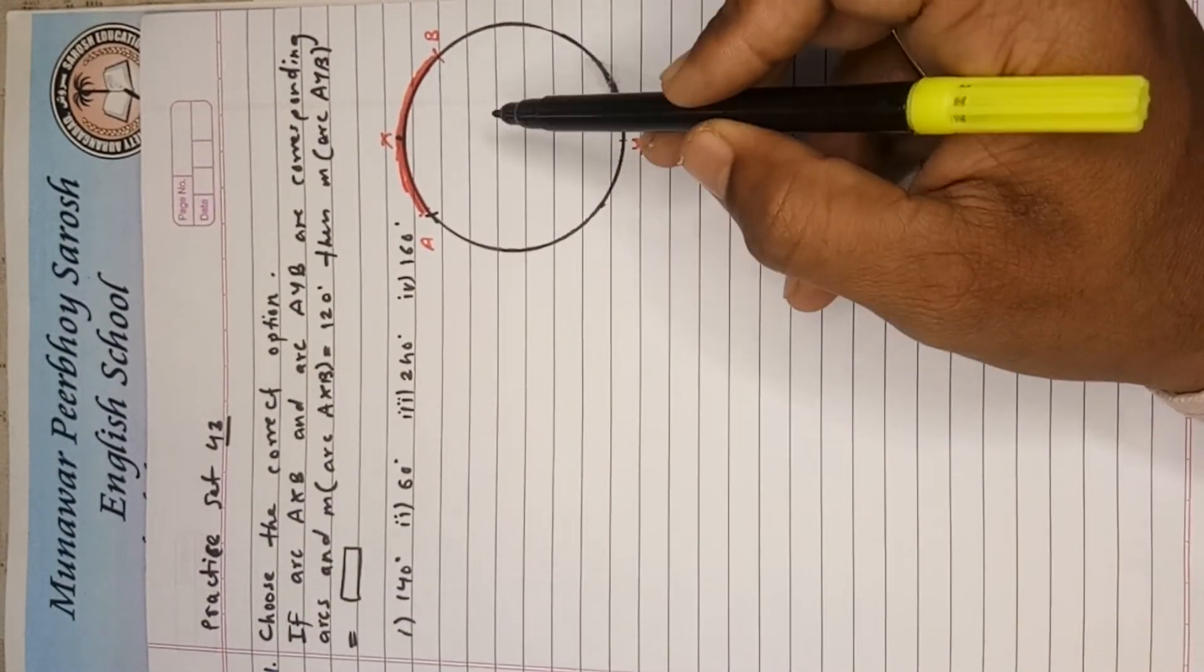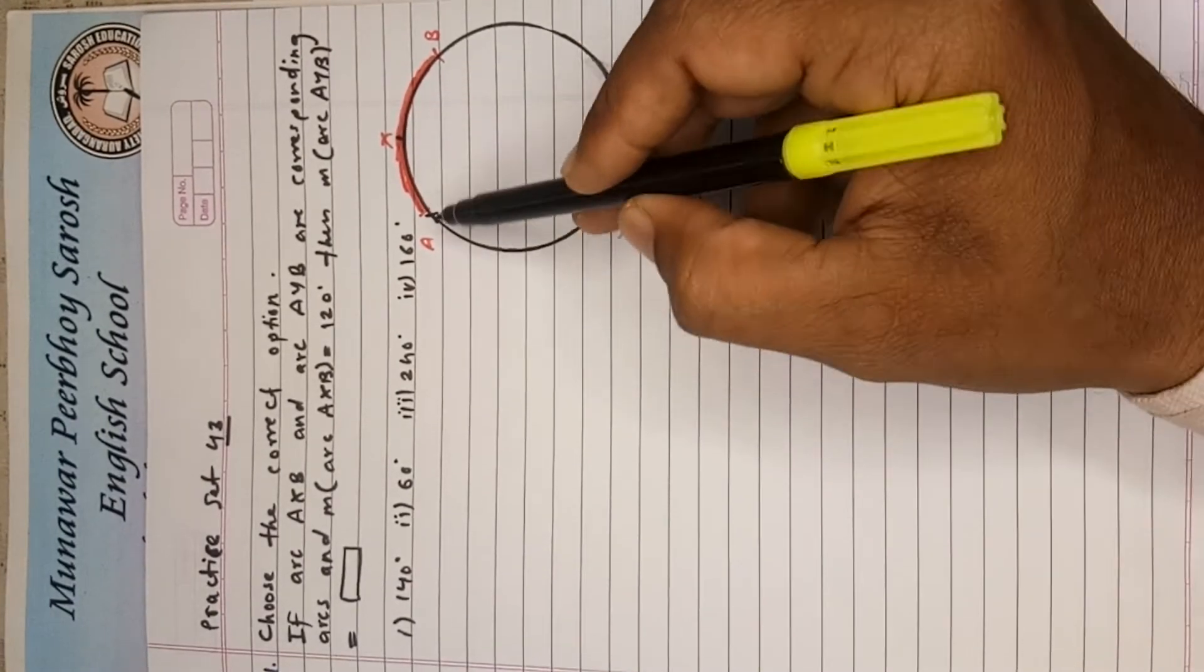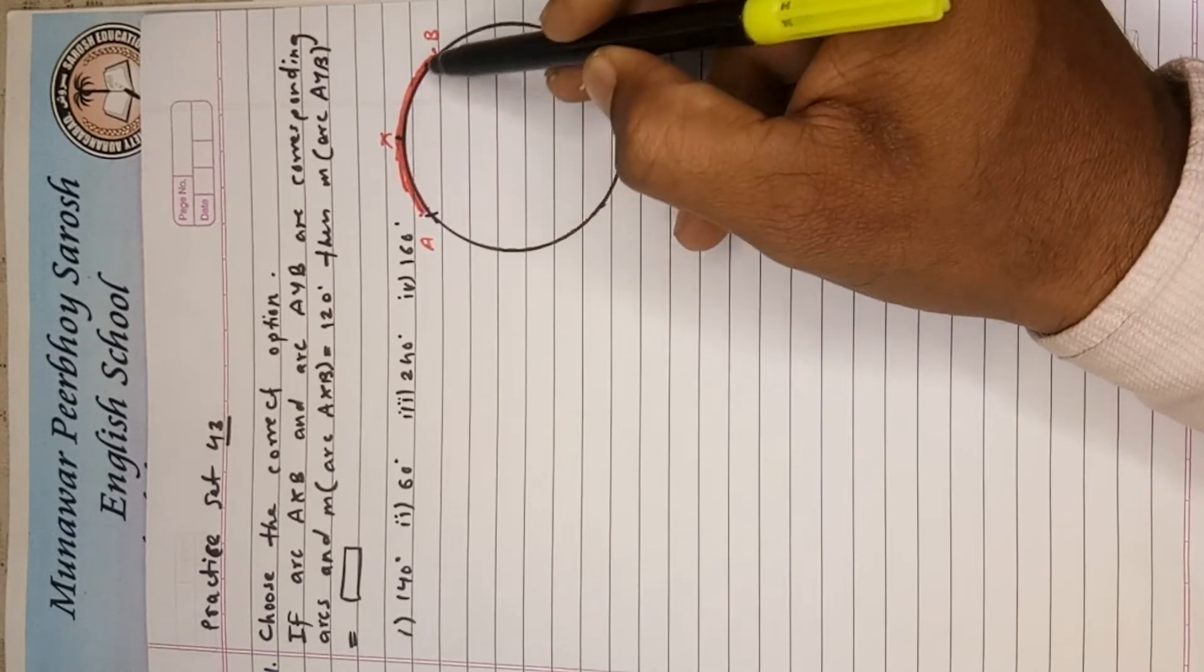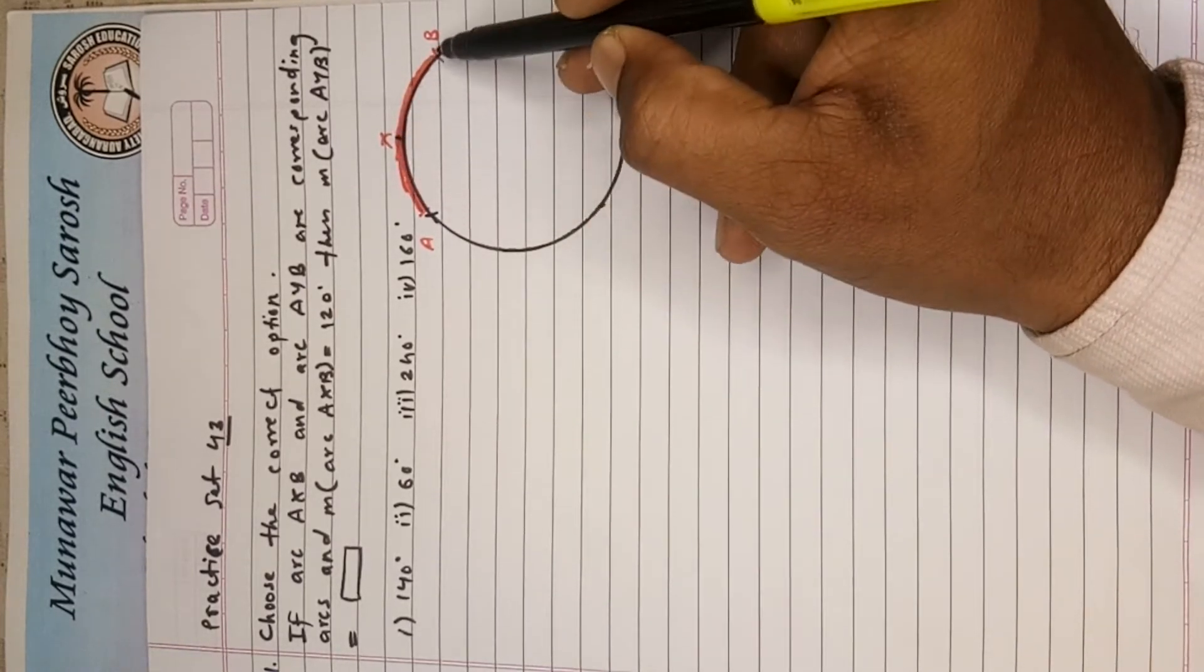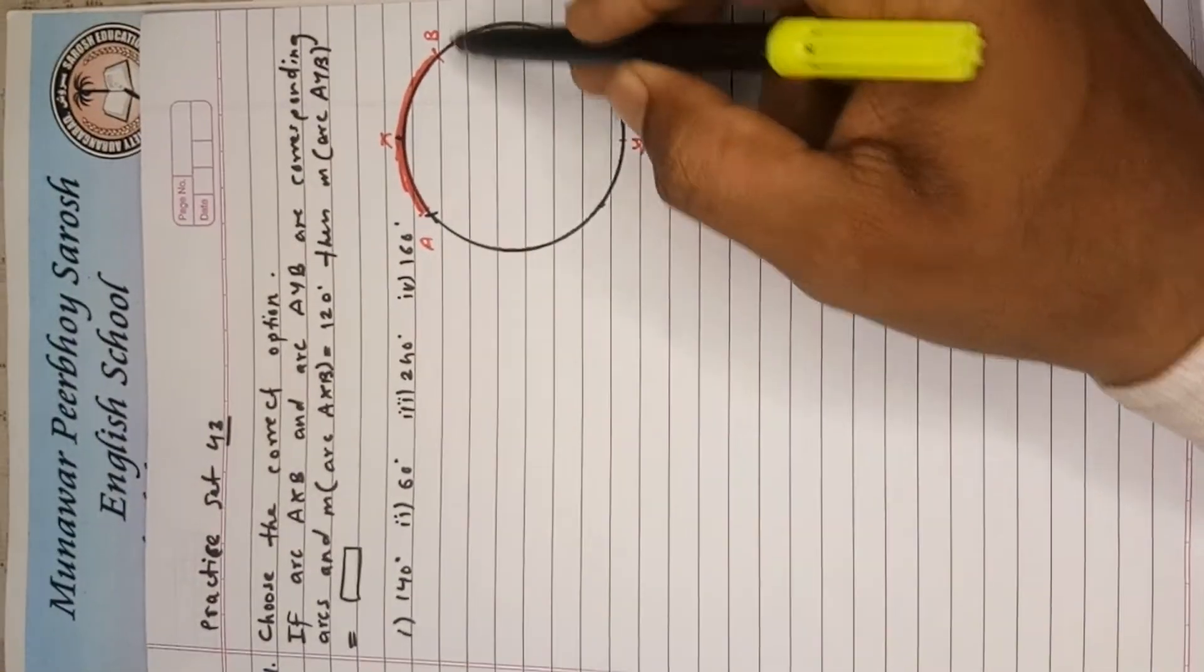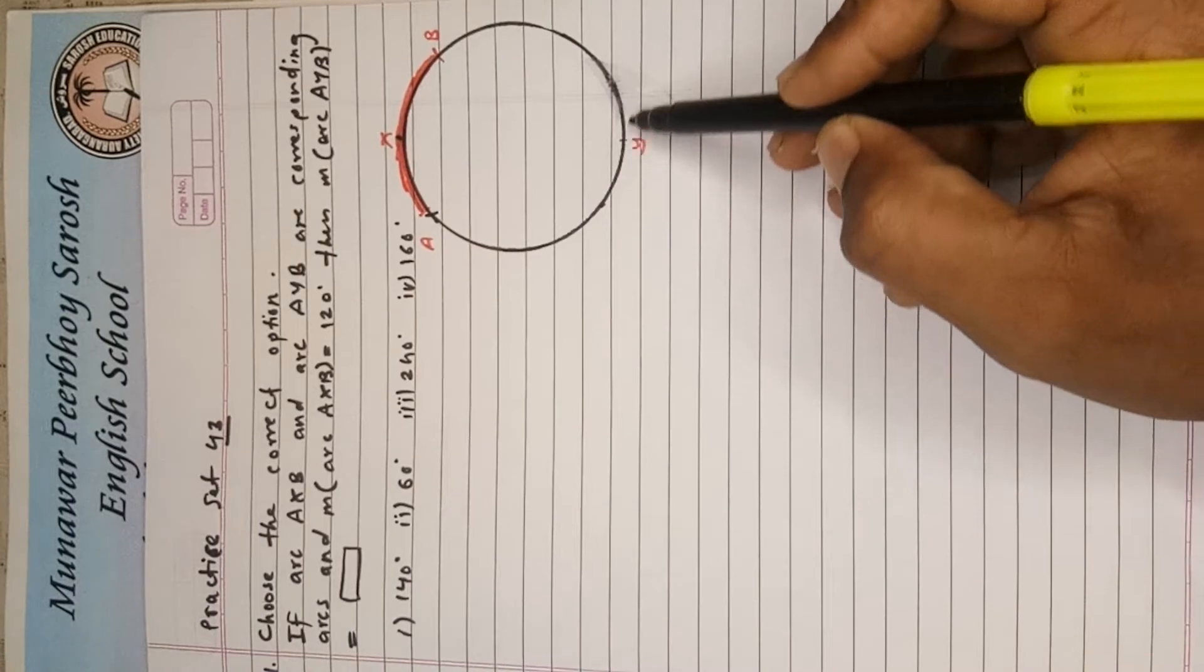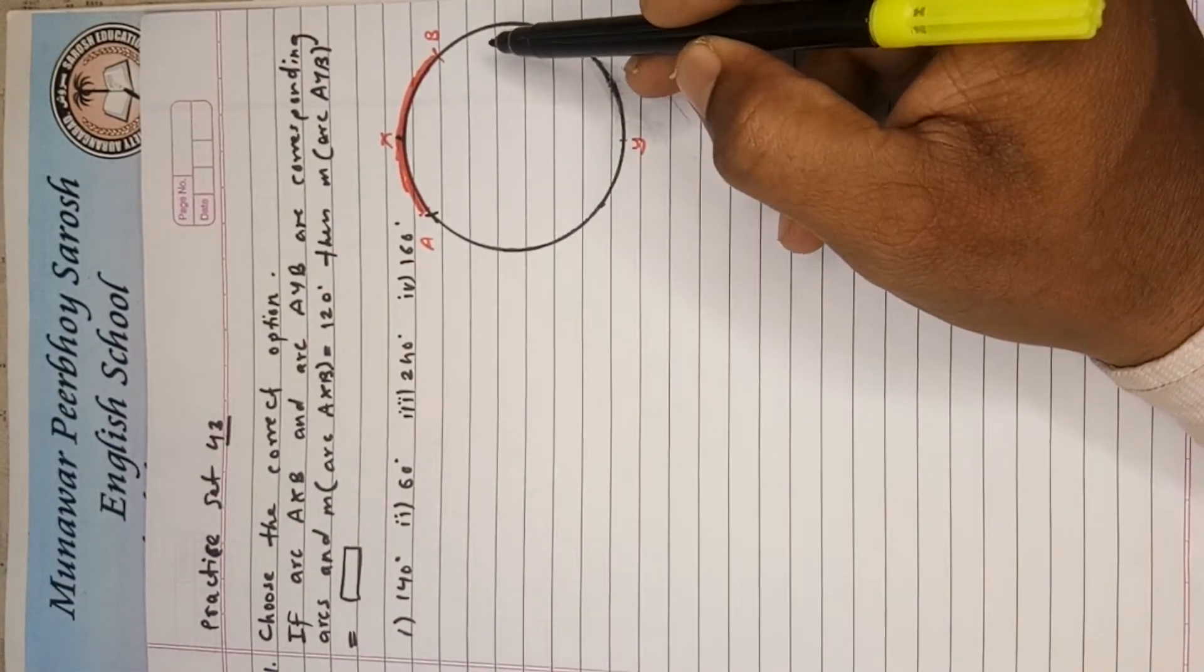So from this circle it is very clear that because of these two arcs, this one arc, this is the smaller arc AXB, is small as compared to AYB. AYB is a major arc, major arc.